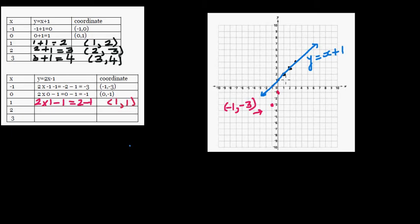The coordinate one comma one is here. When X is two: two times two is four, take away one is three, so when X is two, Y is three. Go two across and three up — so two comma three. When X is three: two times three is six, take away one is five, so when X is three, Y is five. Go three across and five up — that's this point. Then you join all the points with a straight line.